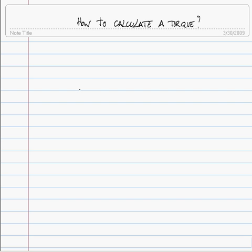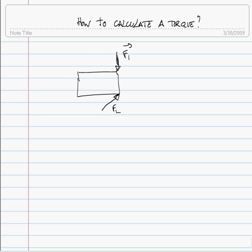Let's imagine a system where forces F1, F2, and F3 are being applied. We know the magnitude of all those forces and the dimensions of our box. We'd like to calculate the torque of each force about point A. The torque of F3 about point A is very different from the torque of F3 about point C, because the R vector will be different.